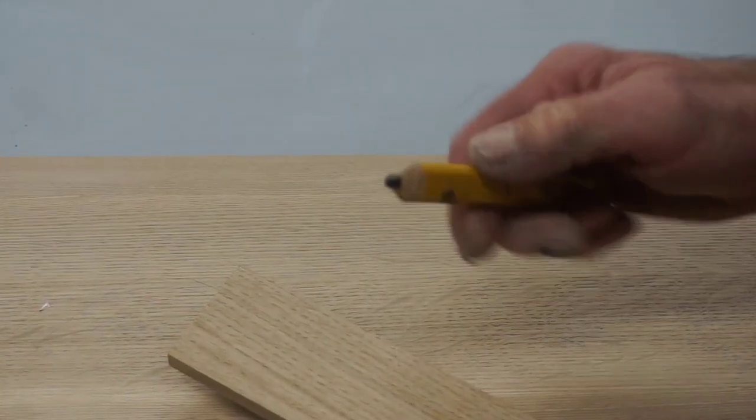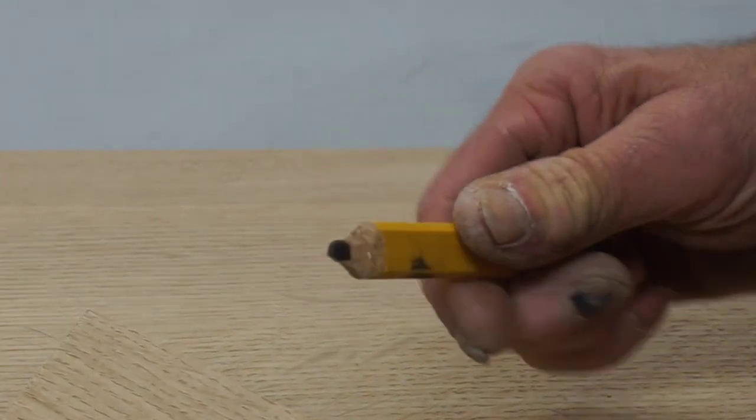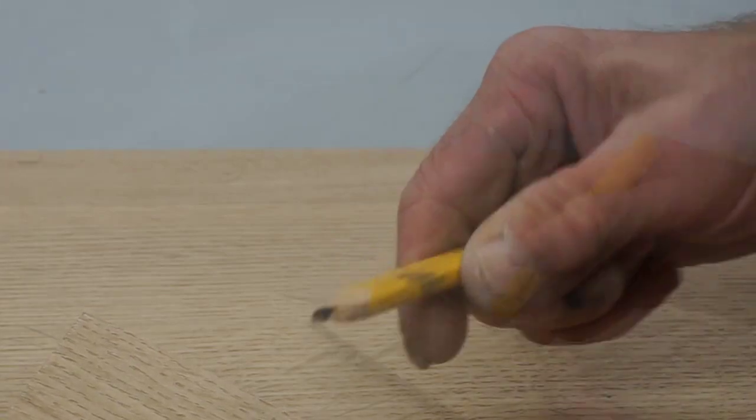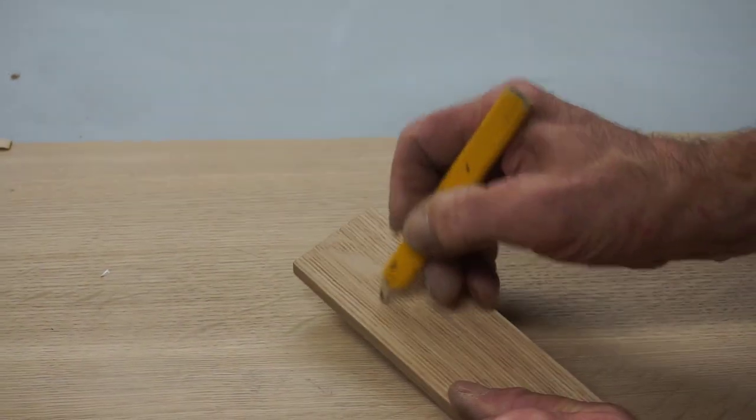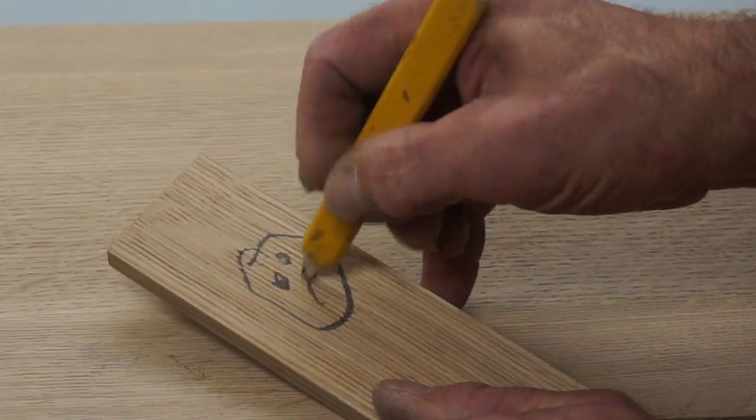But a poorly sharpened carpenter's pencil with a nasty point that looks like it was chewed sharp by a rabid squirrel won't get the job done either. So here's a quick lesson on how I sharpen them.